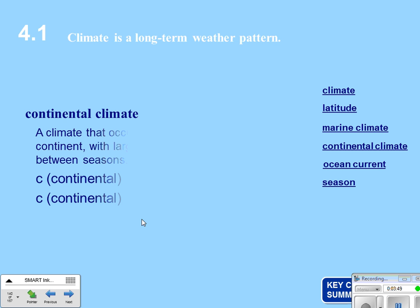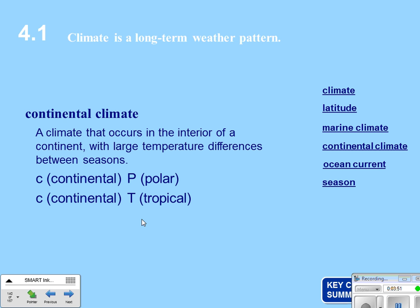Continental climates are climates that occur in the interior of a continent with large temperature differences between seasons. C stands for continental. P is for polar and cold, T is for tropical and warm — so we're talking about dry, warm air or dry, cold air.